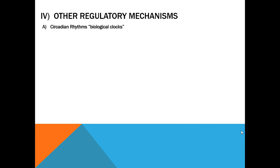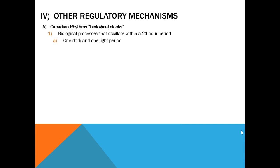Some other mechanisms: circadian rhythms — biological clocks. Right now most of our biological clocks are out of whack because we're getting up at different times, off our normal school schedule. A normal circadian rhythm operates within a 24-hour period with two sub-periods: a light sub-period and a dark sub-period. This is controlled by the pineal gland, which secretes a hormone called melatonin that controls sleep patterns. Melatonin is a naturally produced substance from the pineal gland.